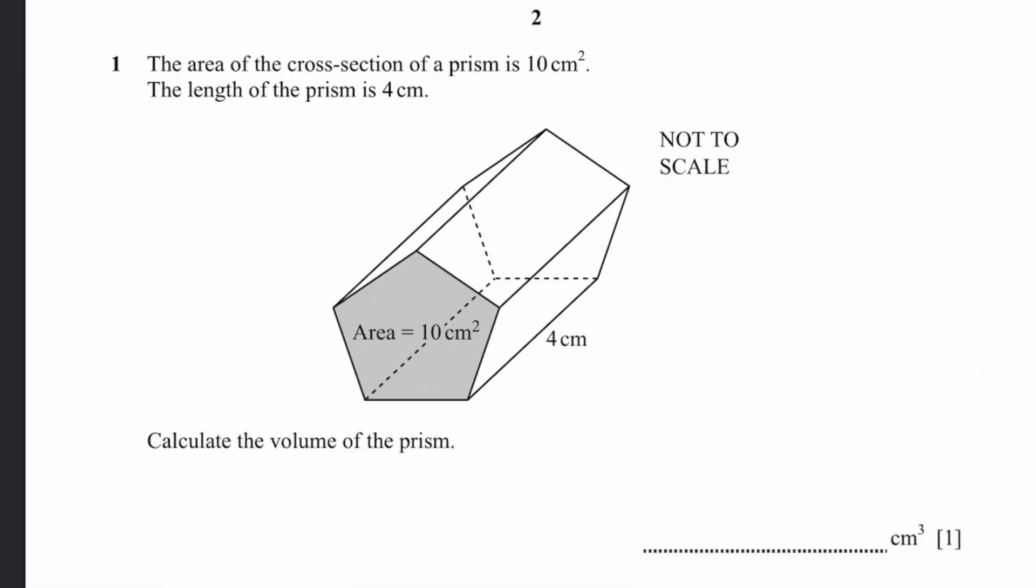Question 1. The area of the cross-section of a prism is 10 cm squared. The length of the prism is 4 cm. Calculate the volume. That's simply equal to the area of the cross-section times the length. 10 times 4, 40 cm cubed. Sorry, it's cm cubed, not squared, but yeah, that's the answer.